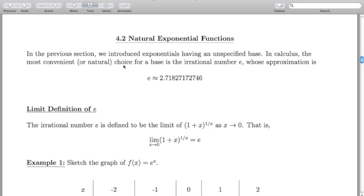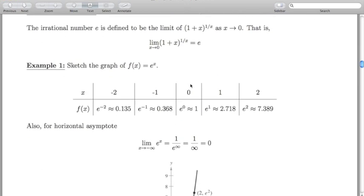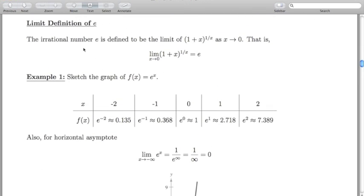In calculus, the most convenient or natural choice for a base is the irrational number e, given by this approximation you see here. We'll discuss later why we're choosing e or why we consider it a natural choice. We'll revisit this notion in the next section. The limit definition of e: we're going to define the irrational number e to be the limit of 1 plus x to the power of 1 over x as x goes to 0. We're defining that limit to be e.